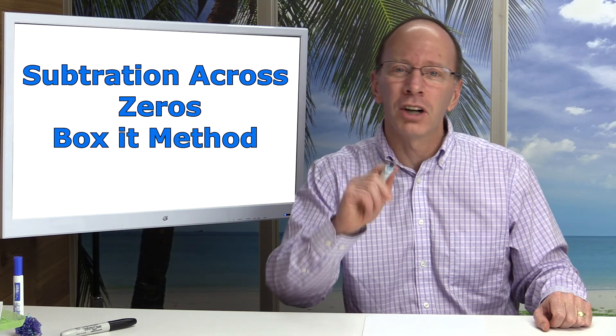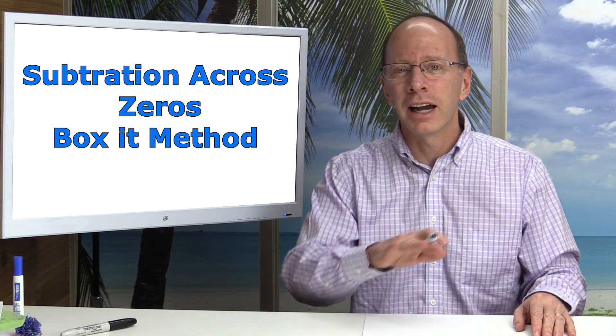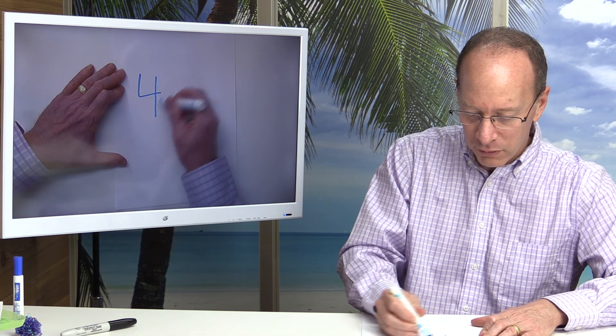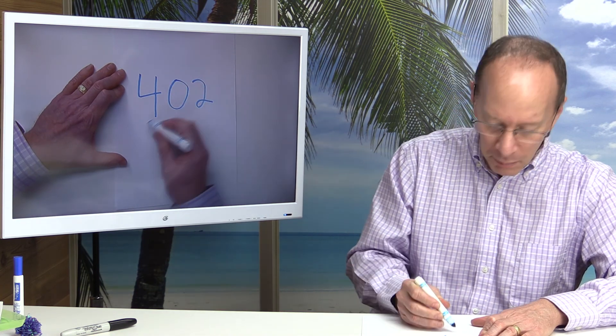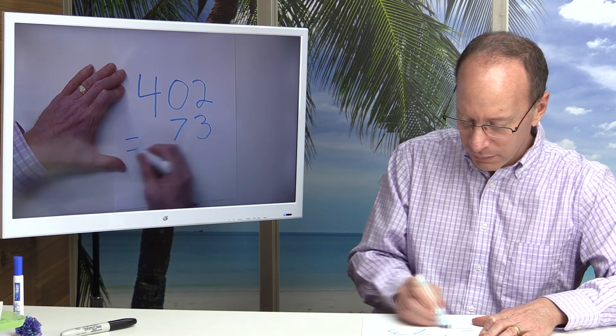Hey, thanks for joining the show today. On the show, I have a really cool method called the box method, and that's when you're subtracting with zeros. I'll show you what I mean. For example, let's say I have a problem with 402 minus 73.